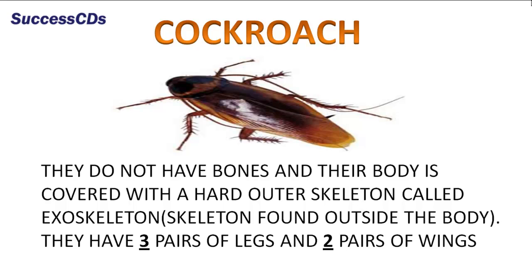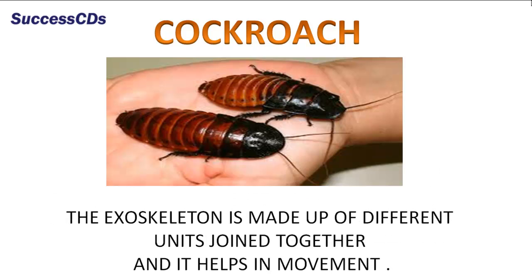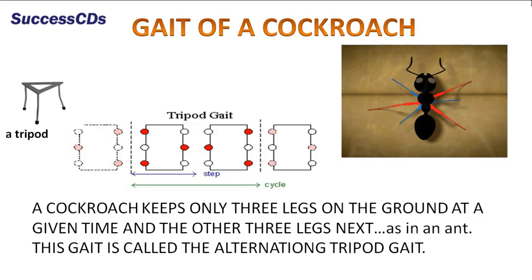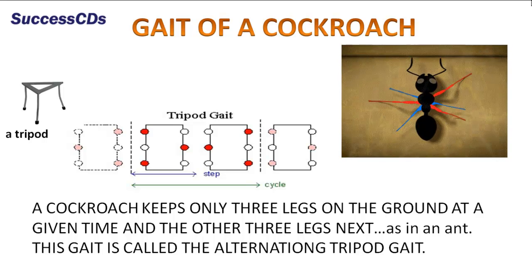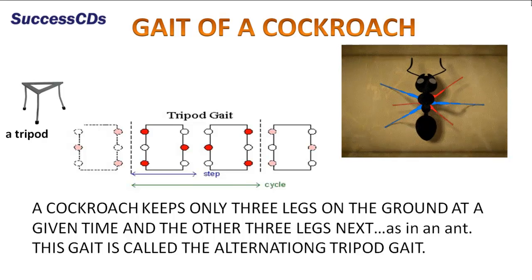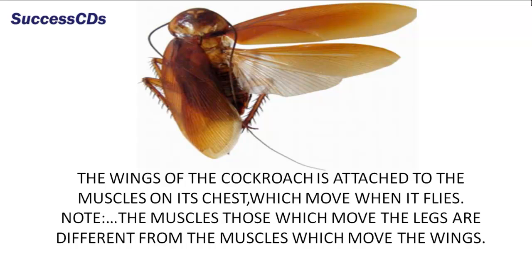A cockroach does not have bones and the body is covered with a hard outer skeleton called an exoskeleton. They have three pairs of legs and two pairs of wings. The exoskeleton is made up of different units joined together and it helps in movement. A cockroach keeps only three legs on the ground at a given time and the other three legs act similarly, in a gait called the alternating tripod gait. The wings of the cockroach are attached to the muscles on its chest which move when it flies. The muscles that move the legs are different from the muscles which move the wings.